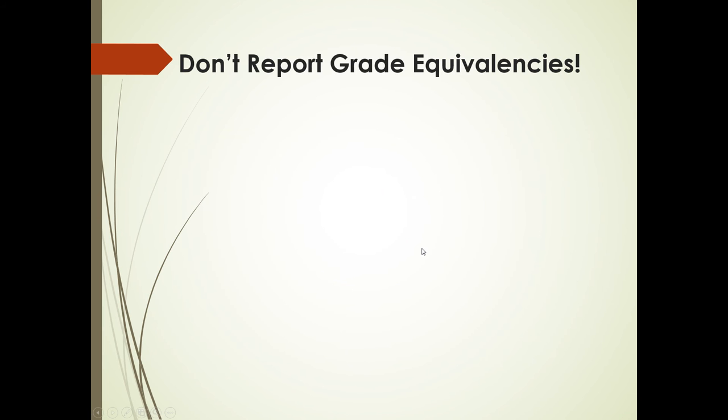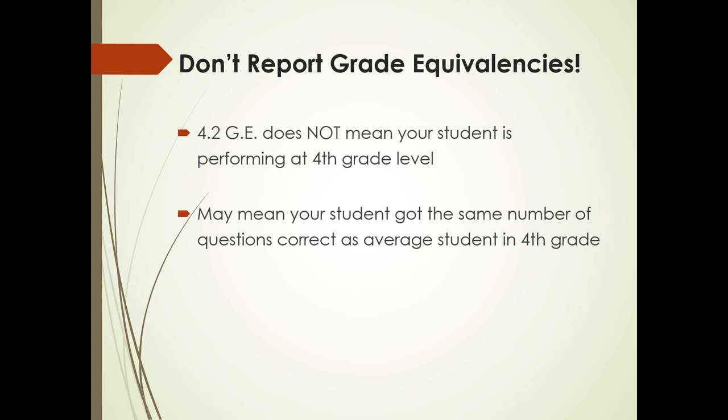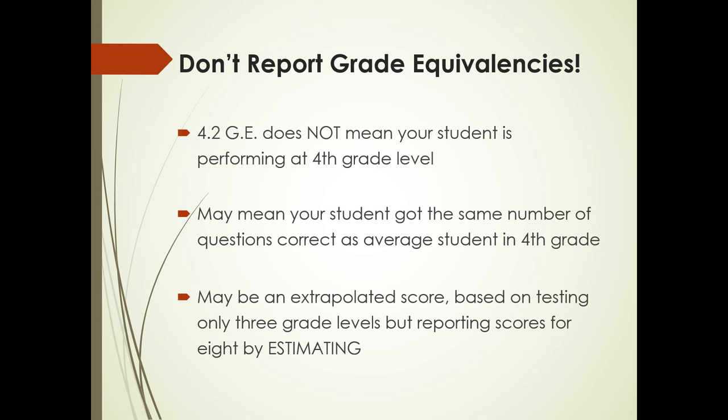Don't report grade equivalencies. I can't say that often enough. A 4.2 grade equivalency does not mean your student is performing at fourth grade level. It may mean that your student got the same number of questions correct as the average student in the second month of fourth grade. However, it may also be an extrapolated score based on testing only three grade levels, but reporting scores for eight levels by estimating upwards and downwards. In any case, no matter how that 4.2 is derived, I can guarantee you that if you're a second grade teacher and little Sally in second grade scores 4.2 and you report that to her parents, they're going to ask you why you do not have her reading at fourth grade level material. And this test does not say that that's where she can read. Only an informal reading inventory will tell you that, which we'll go through in a later presentation.